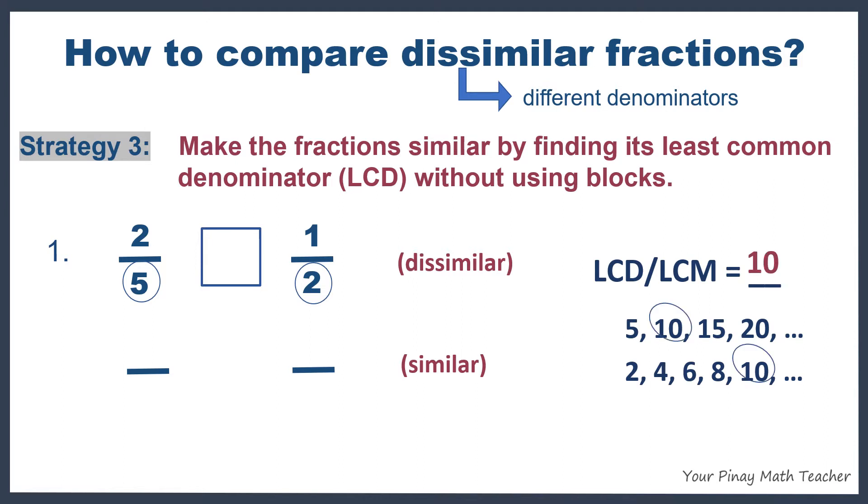10 is now our least common denominator, which must be written at the bottom of the fraction bar. Now let's find the equivalent fraction of two-fifths with a denominator of 10. What will you multiply to 5 to get 10? Of course, you have to multiply it by 2. Do the same with the numerator 2. Now let's go to one-half. What will you multiply to the denominator 2 to get 10? You multiply it by 5. Do the same with the numerator 1. Now, 2 times 2 is 4, 1 times 5 is 5. So we have 4 tenths and 5 tenths. They are now similar. Since 4 is less than 5, then 4 tenths is less than 5 tenths. And so 2 fifths is less than 1 half.